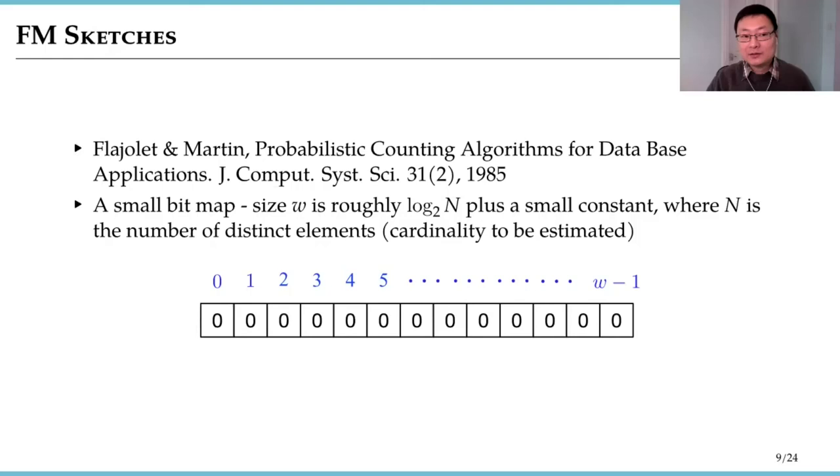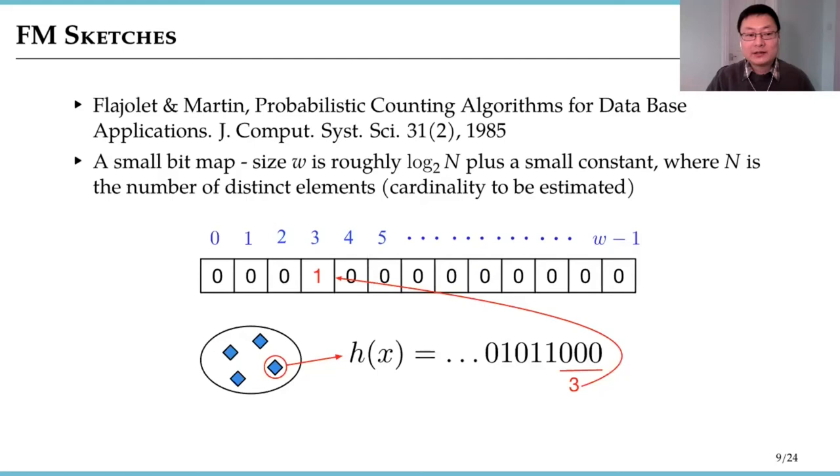The sketch we use in the paper is FM sketch. The structure of the sketch is quite simple, a bitmap. The size of the sketch is dependent on the cardinality to be estimated. If the cardinality to be estimated is N, then the size of the sketch is roughly log N plus a small constant. Initially all bits in the sketch are set to zero.